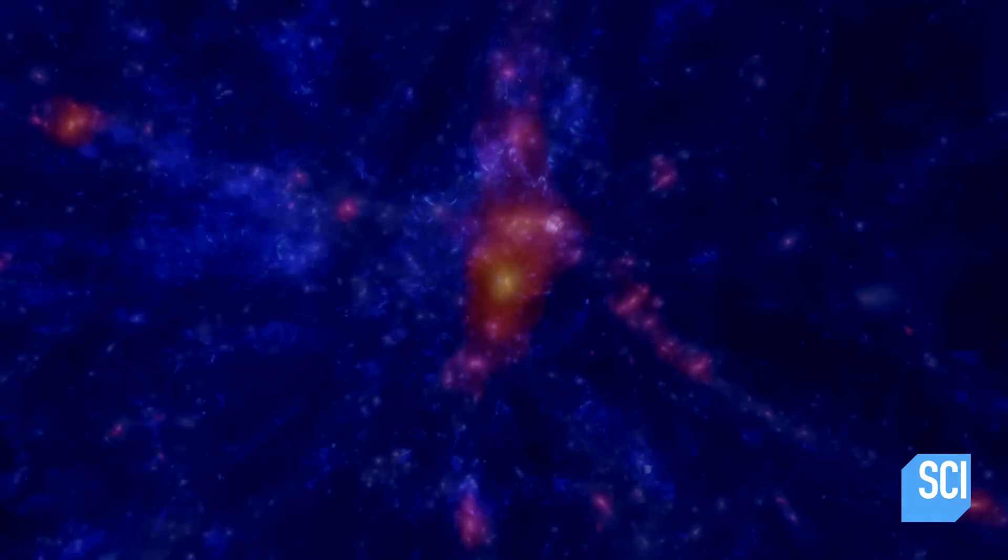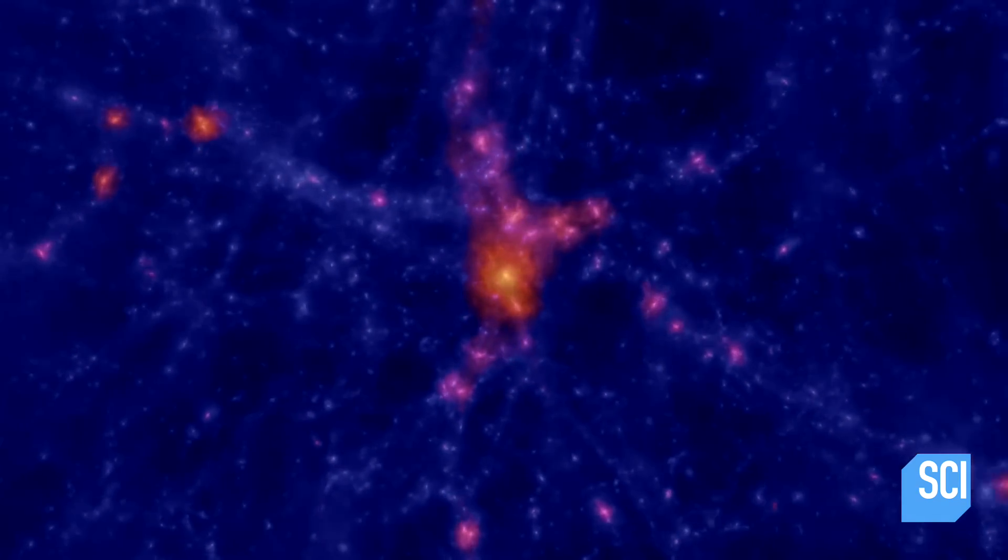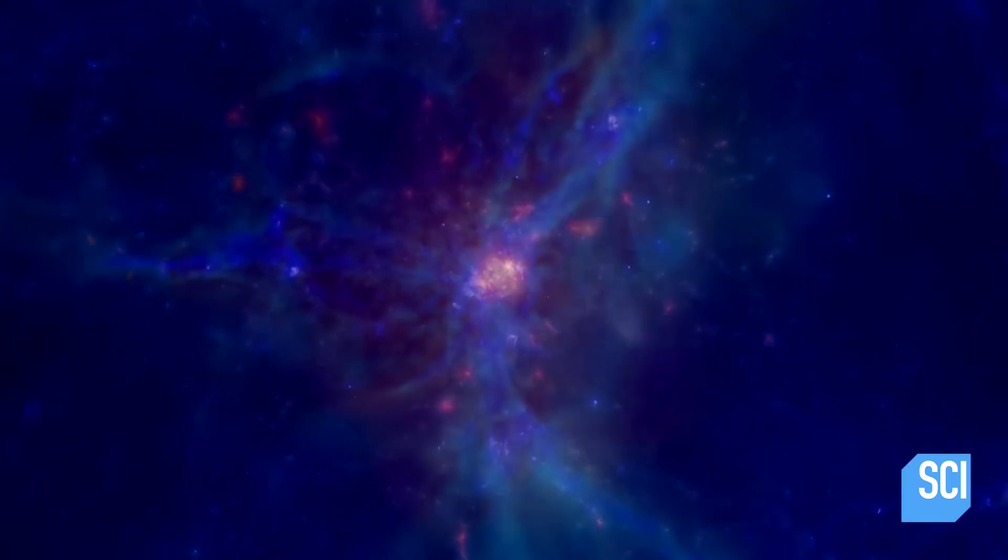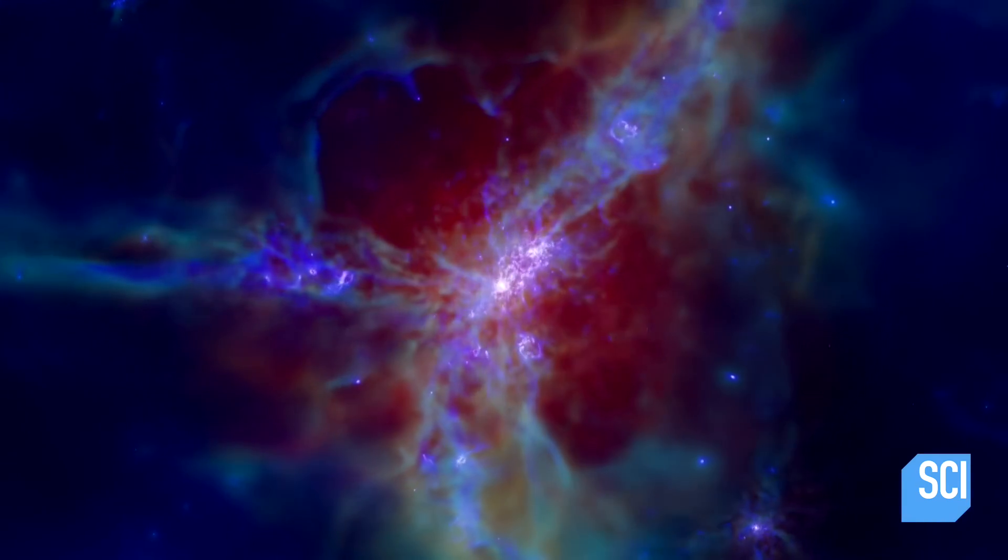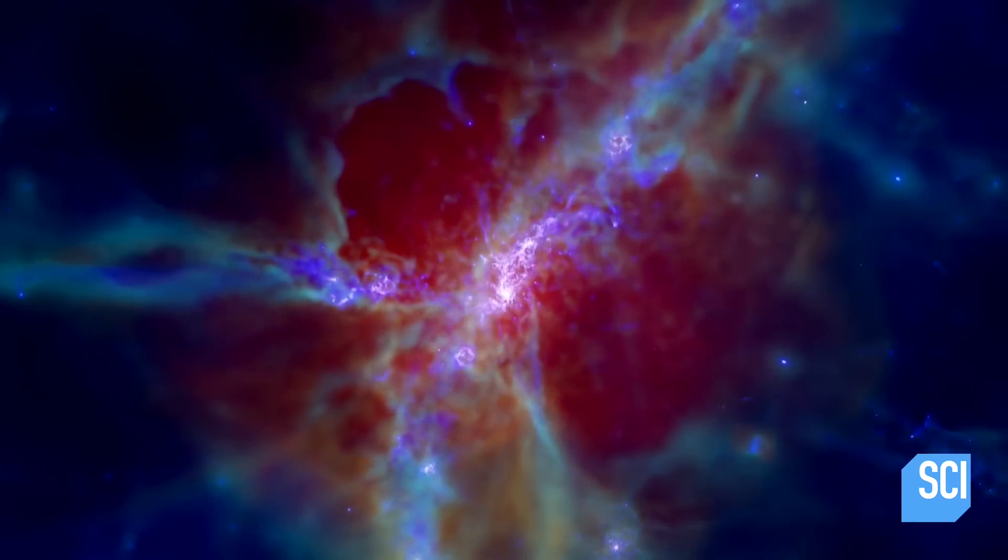The filaments formed a sprawling web of dark matter strands stretching throughout the universe. The gravity of this dark matter web then dragged in normal matter, which built up where the filaments meet and eventually collapsed to form galaxies.